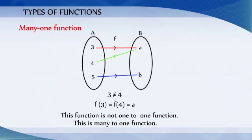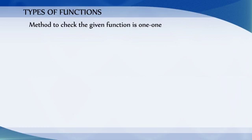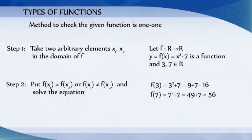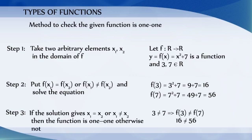How can we check if the given function is 1-to-1 or not? Take two arbitrary elements x1, x2 in the domain of the function f. Substitute f(x1) = f(x2) or f(x1) ≠ f(x2) and solve the equation. If the solution gives x1 = x2 respectively, then the function is 1-to-1. Otherwise, it is not 1-to-1.